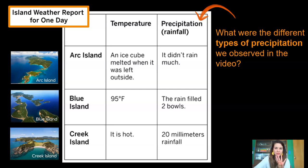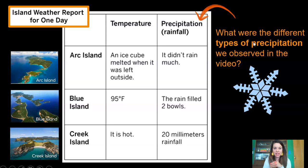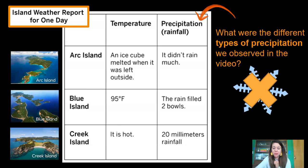Do you remember the four types of precipitation we observed in the last lesson? The four types of precipitation are rain, snow, sleet, and hail. Rain is the only one that comes out of the sky as a liquid — the other three are all frozen forms of precipitation. Look down the temperature column and see if you see any island that might have snow. Arc Island says an ice cube melted when left outside, Blue Island's temperature says 95 degrees Fahrenheit, and Creek Island says it is hot. None of those sound like places where there might be snow — they all sound pretty warm.